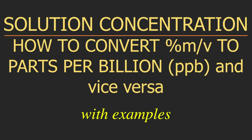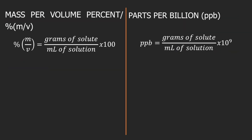As usual, I have included examples so you can practice some calculations. Let's start with a quick recap about mass per volume percent and parts per billion. Mass per volume percent is also known by the symbol %m/v, or in other references %w/v, or weight per volume percent.